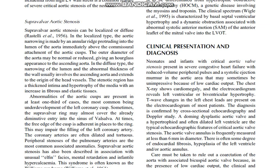Supravalvular aortic stenosis can be localized or diffuse. In the localized type, the aortic narrowing is formed by an annular ridge protruding into the lumen of the aorta immediately above the commissural attachment of the aortic cusps. The outer diameter of the aorta may be normal or reduced, giving an hourglass appearance to the ascending aorta.